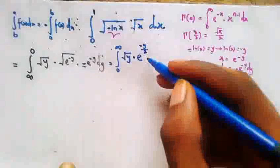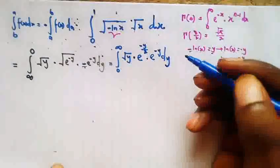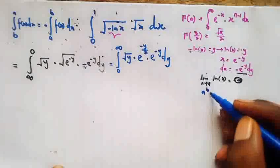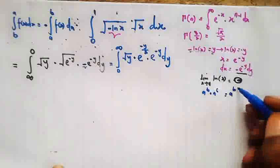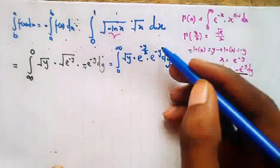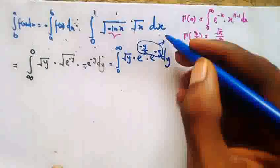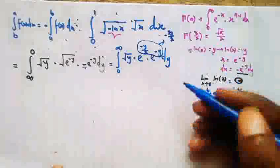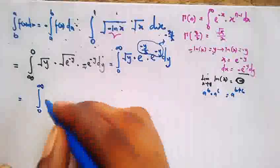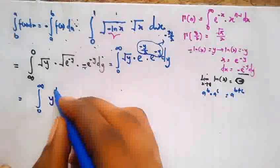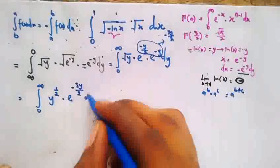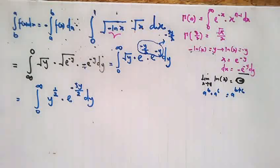We apply the indices law: e raised by b times e raised by c equals e raised by b plus c. Here we have e raised by negative y over 2 times e raised by negative y, so the new power is negative y over 2 plus negative y, which gives us negative 3y over 2. Our integral becomes the integral from 0 to infinity of y raised by 1/2 times e raised by negative 3y over 2, dy.